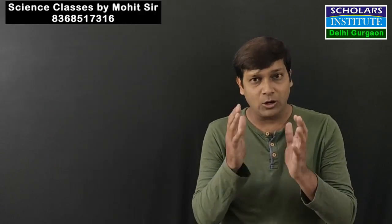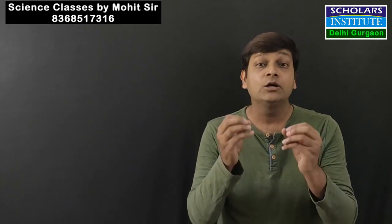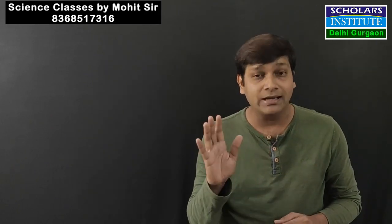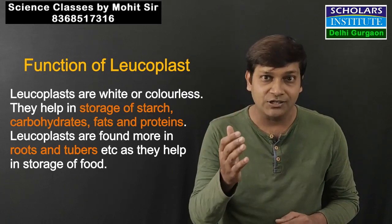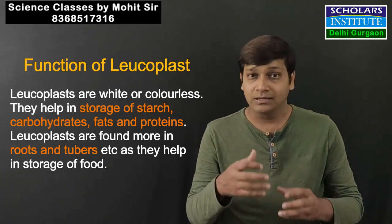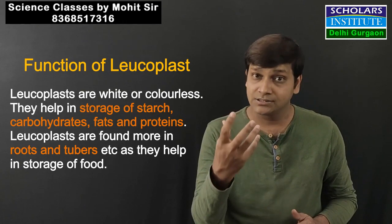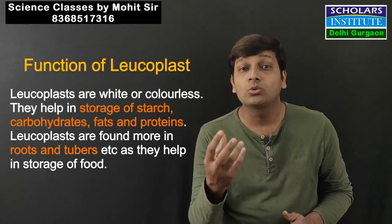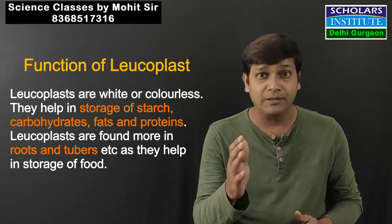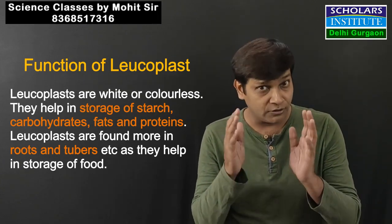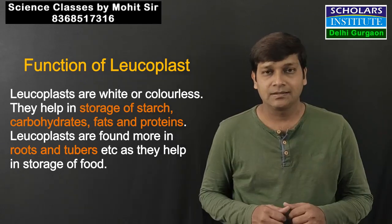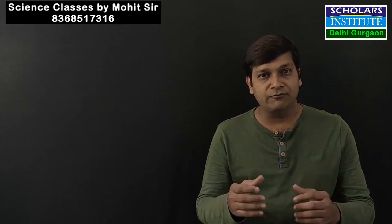Similarly, there is another plastid called Leucoplast. Leucoplast has no color inside it. Its function is to store various substances, such as food for the plant. These plastids are generally found in roots and in parts of the plant where storage of food or material is taking place. With this, we come to the end of this part of the fundamental unit of life.